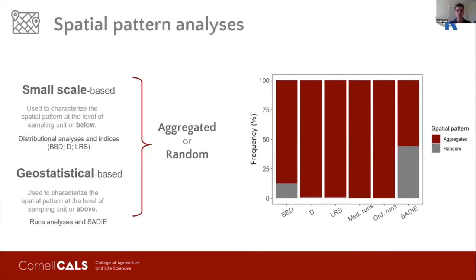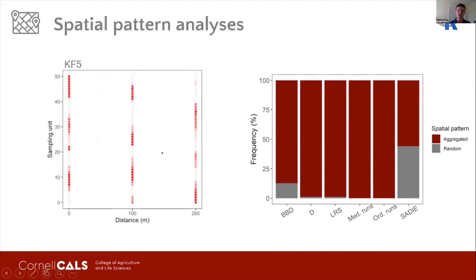For most of the analysis, fields were classified as aggregated. However, the pattern was random for 50% of the datasets when the location of the sampling units was included in the analysis by SADIE. This means that the clusters of disease were randomly dispersed on these fields, as can be seen in field KF5, where the clusters of disease are randomly dispersed inside the field.